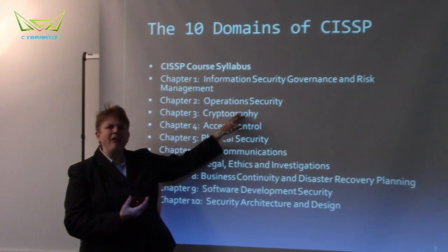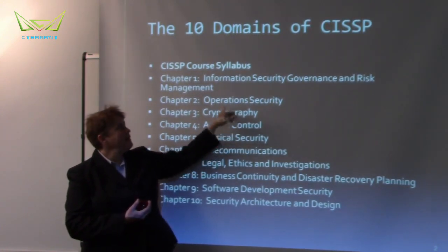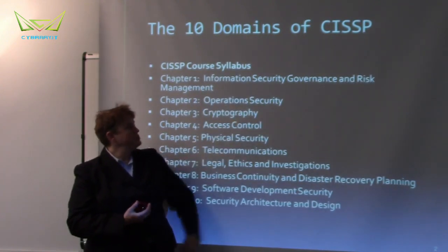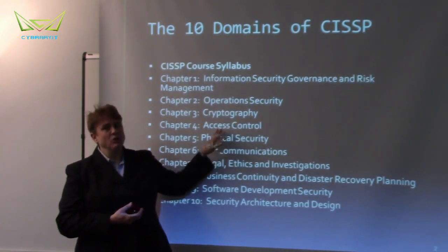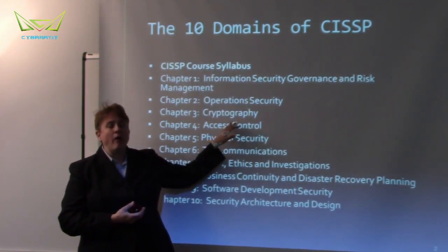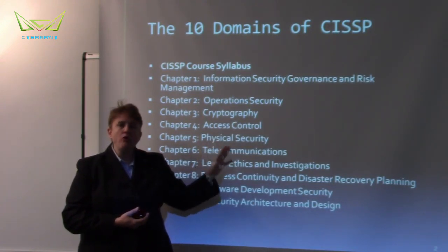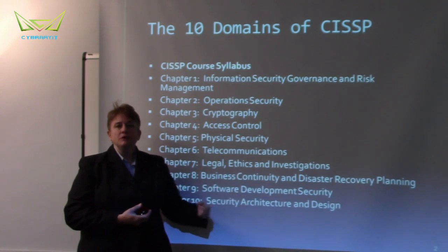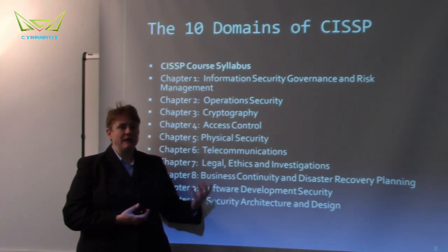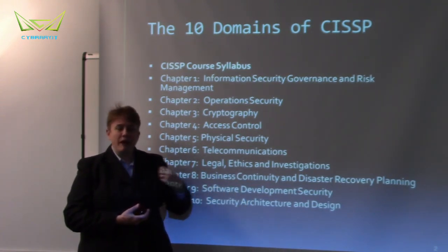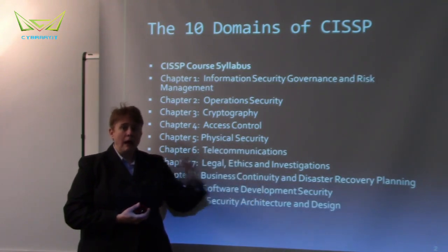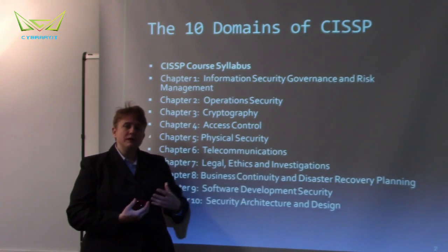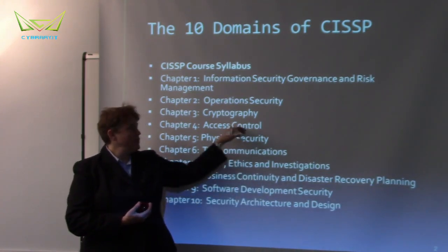I would put cryptography in the top five. The most testable are certainly information security governance and risk management, and crypto also. Access control - that's a top five item as well. Access control covers all the ways we regulate what a subject can do with an object. The subject being some sort of active entity - I'm a subject; if I go to access a folder, I'm being active. The folder is passive - that's the object. So what a subject can do with an object is all under access control.